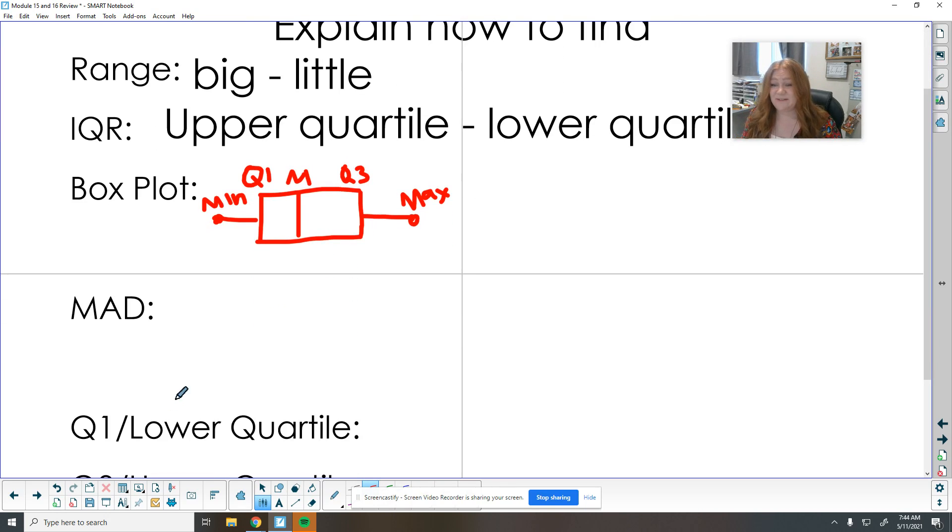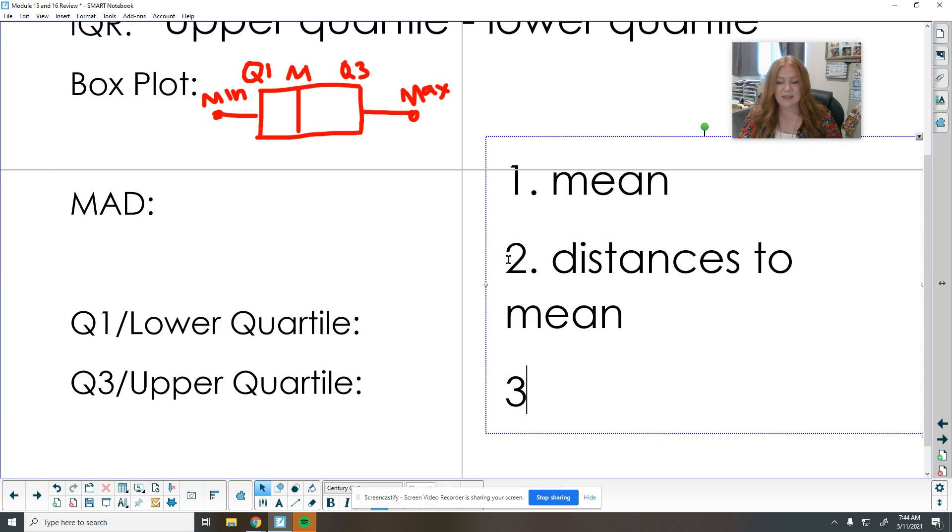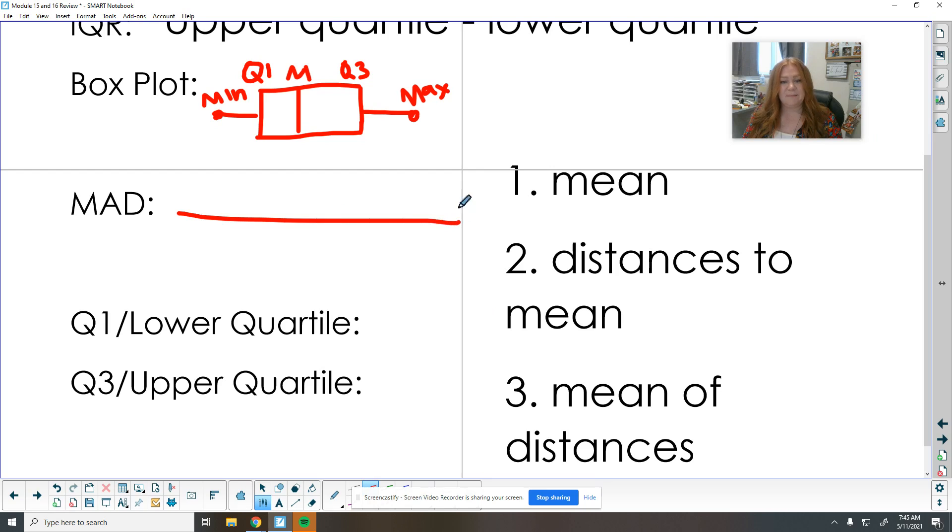To find our mean average deviation. So I've got three steps that it takes to do the math. One, find the mean. Two, remember we find the distances to the mean. And then three, we find the mean of the distances. So that is MAD right there. Mean absolute deviation.